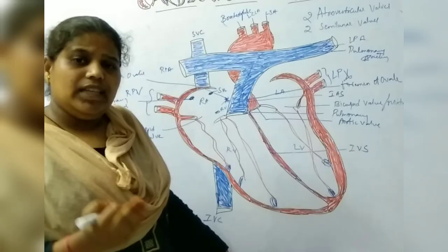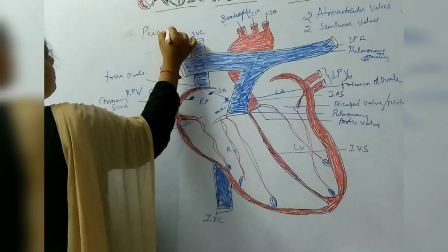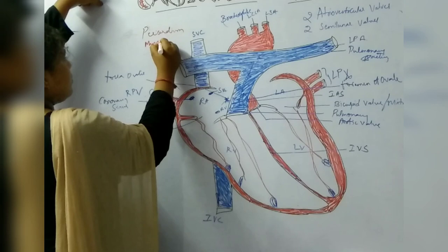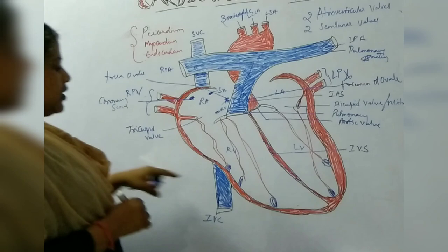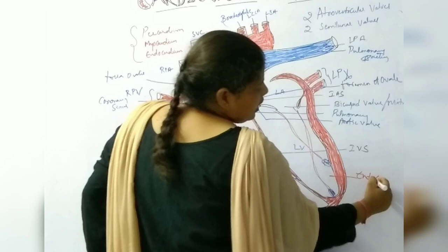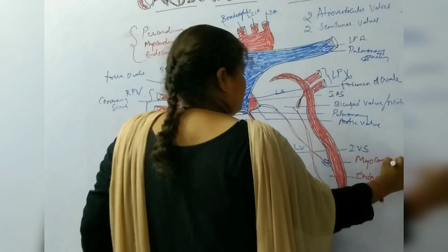There are 3 layers of the heart: the outer pericardium, the middle myocardium, and the inner endocardium. The inside area is the endocardium, and the red color shown here is the myocardium.